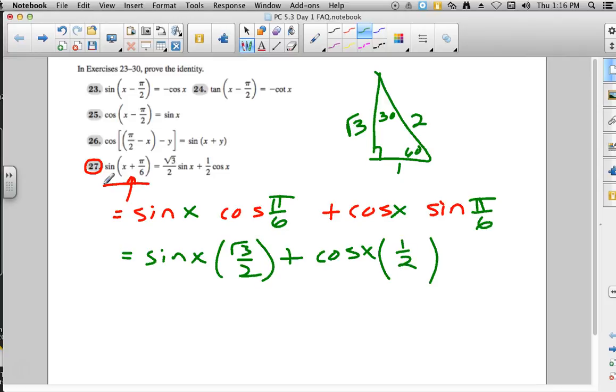So if you're not remembering your unit circle, you can always make a quick sketch of your 30, 60, 90, and 45, 45, 90. But this, of course, will be the square root of 3 over 2 sine of x plus 1 half cosine of x. And that is what they wanted us to prove. So nice formula that led us exactly where we needed to go.